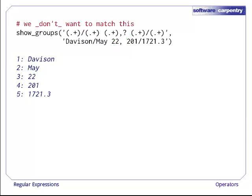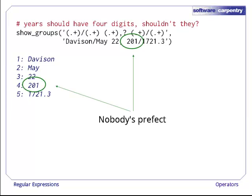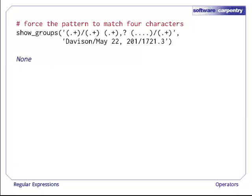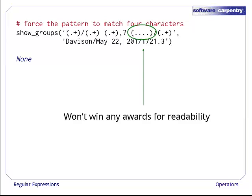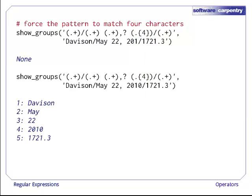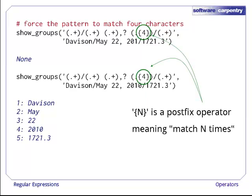Let's tighten up our pattern a little bit more. We don't want to match this record. Somebody's mistyped the year and given us three digits instead of four. Either that, or whoever took this reading was taking advantage of the physics department's time machine. We could use four dots in a row to force the pattern to match exactly four digits, but this won't win any awards for readability. Instead, let's put the digit four in curly braces after the dot. Curly braces with a number between them is a postfix operator meaning match the pattern exactly this many times.